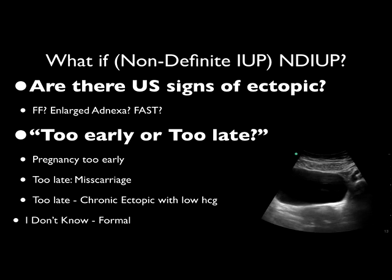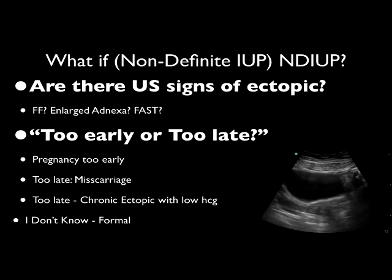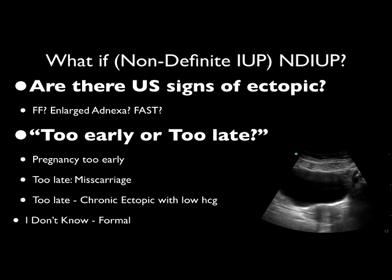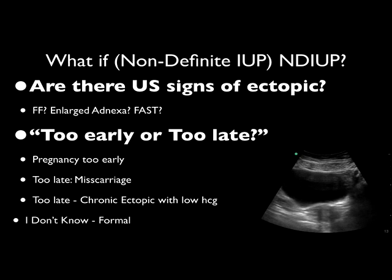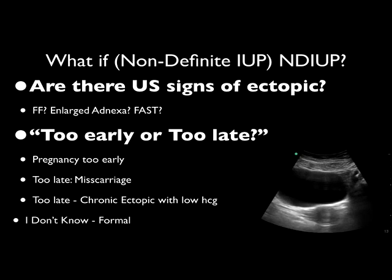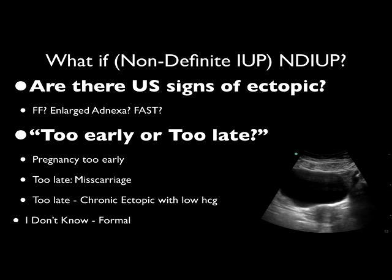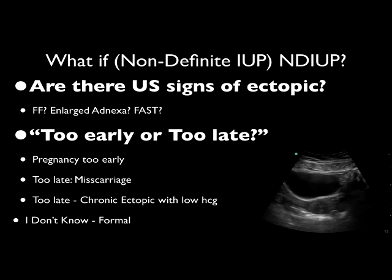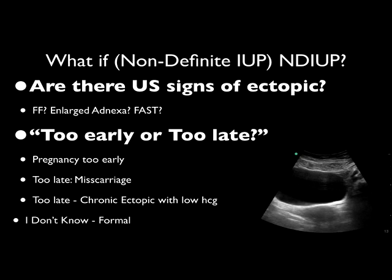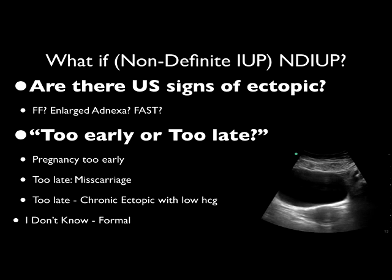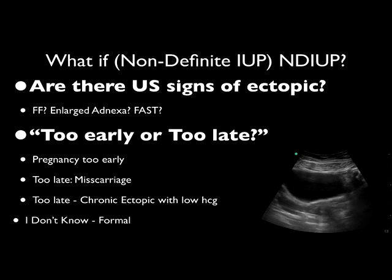Do a FAST examination — do you see free fluid in the right upper quadrant? The next question is: I'm scanning this patient and I don't see a definite IUP. Am I scanning too early or too late? Generally, if scanning too early, it could be because it's too early in the pregnancy. If it's too late, the patient could have already had a miscarriage. Another possibility is that the patient has a chronic ectopic pregnancy with low HCG and we're not able to visualize an intrauterine pregnancy.